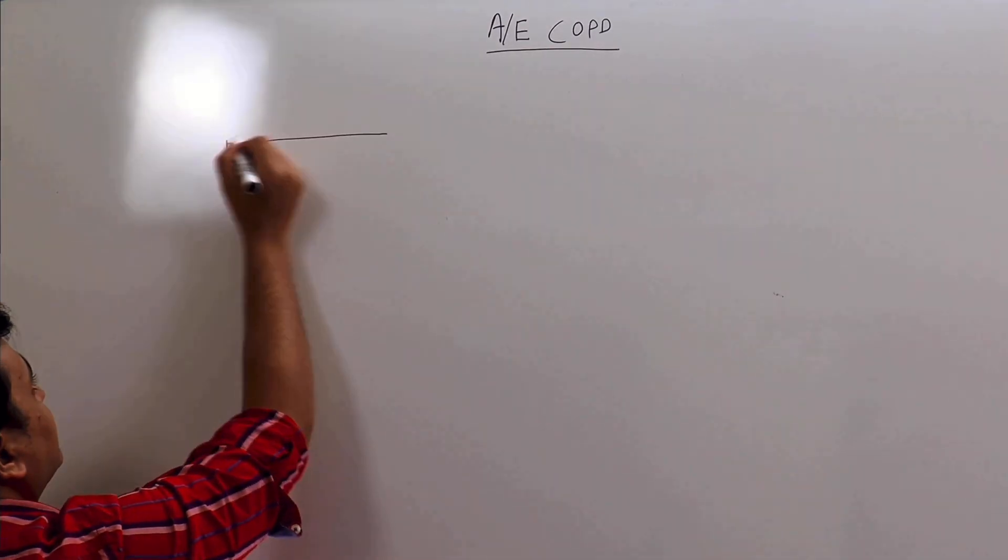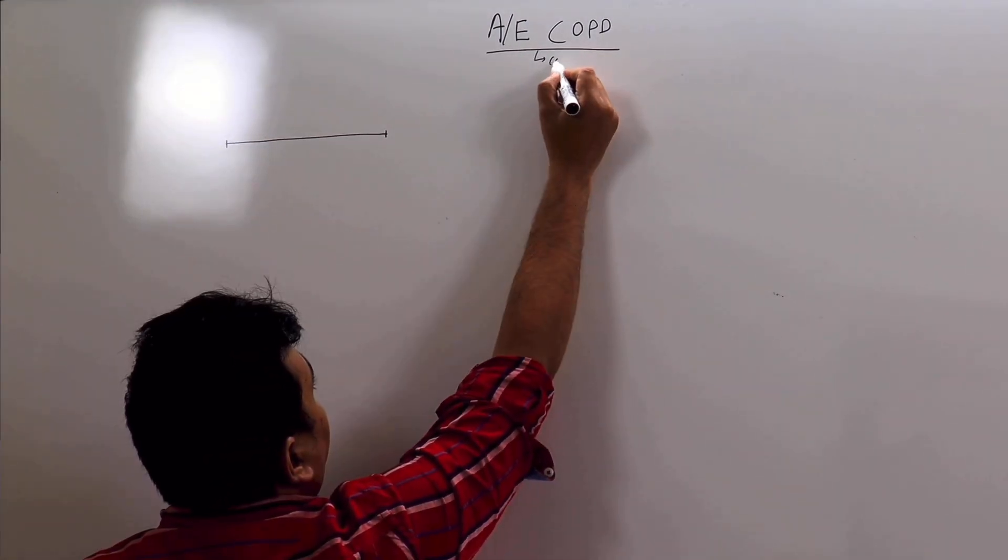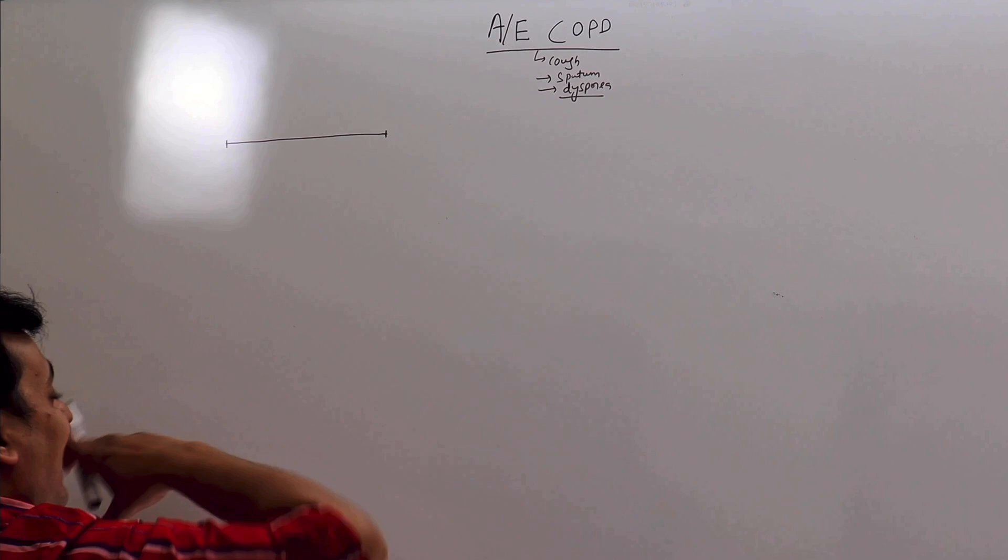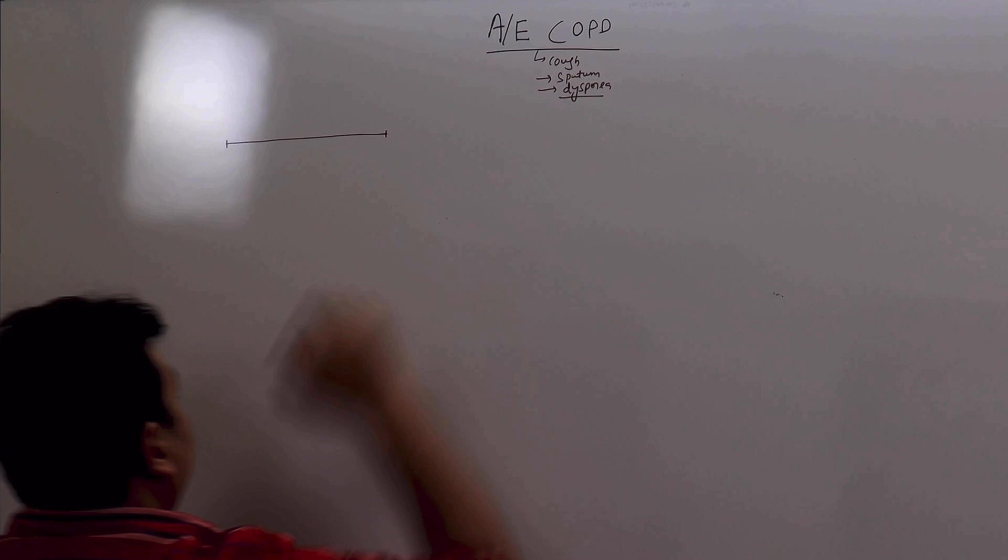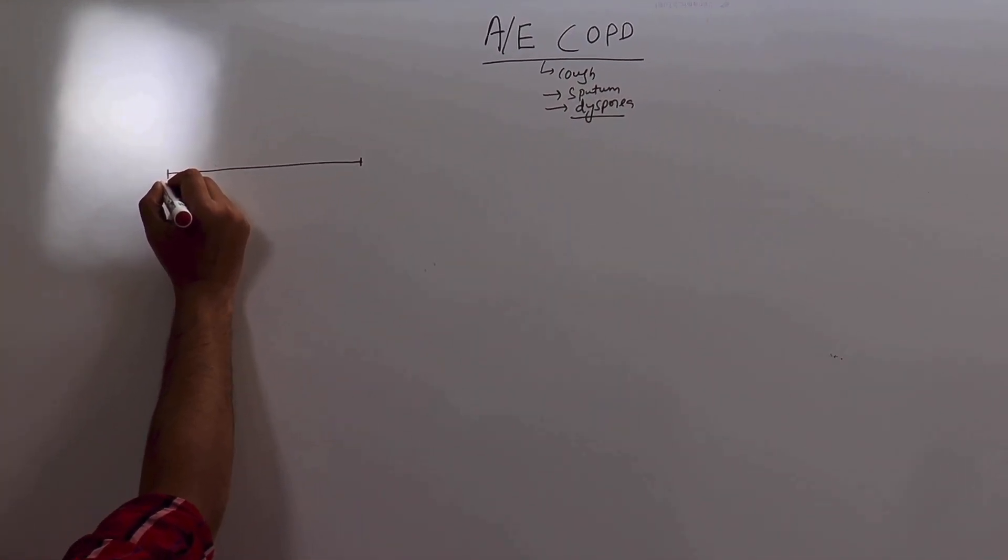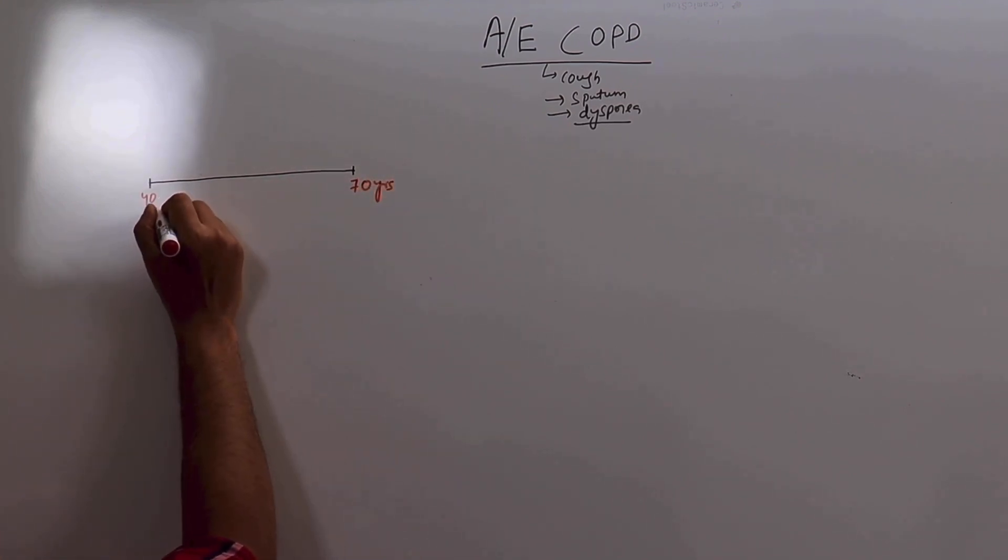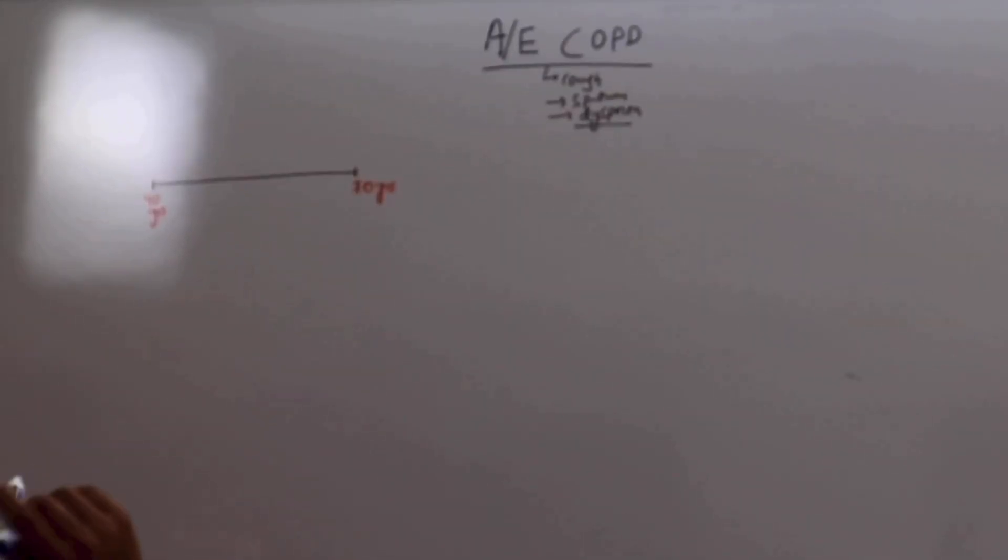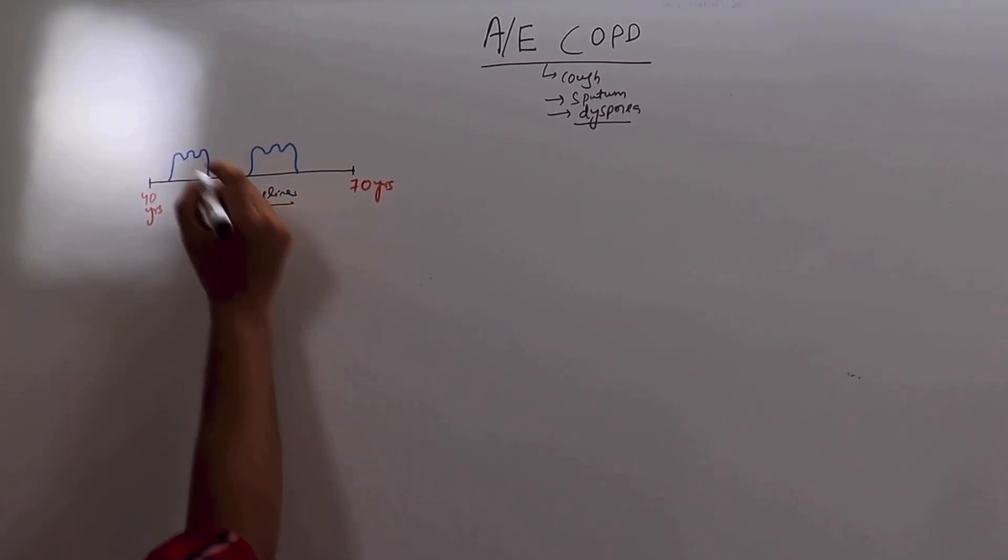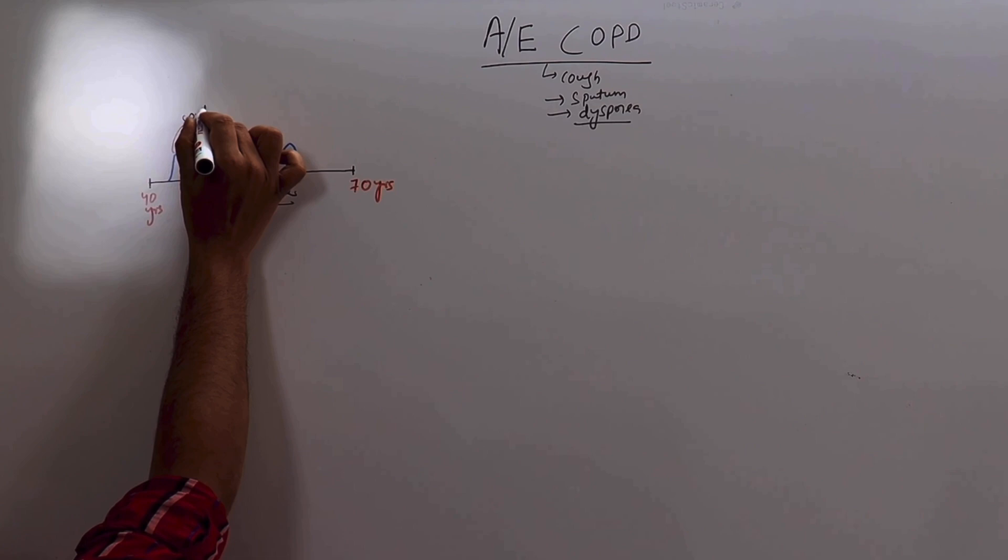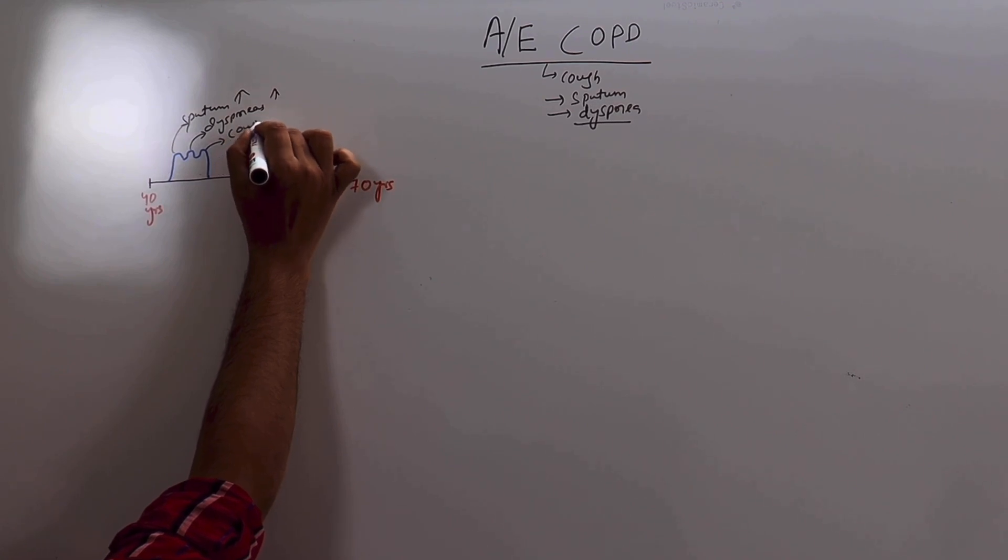Consider this is the lifespan of a COPD patient. There are times when the baseline signs and symptoms - they are cough, sputum production, and dyspnea. During the lifespan of the COPD patient, during some time these symptoms are aggravated. For example, if a person develops COPD at 40 years and goes up till 70 years, in between at different intervals there will be periods of exacerbation. What is that? From the baseline, the sputum production increases considerably, the dyspnea increases, and the cough severity increases.